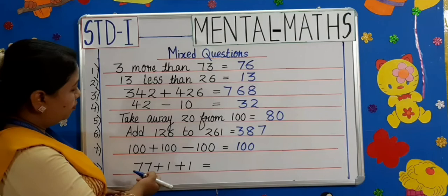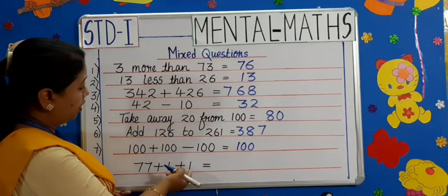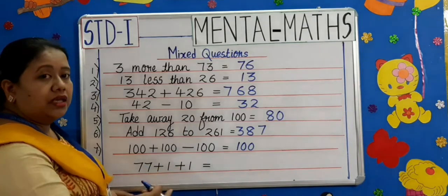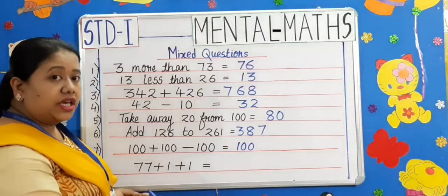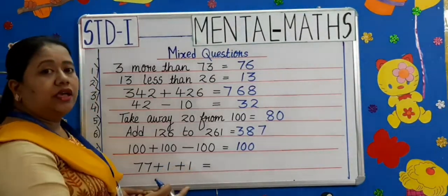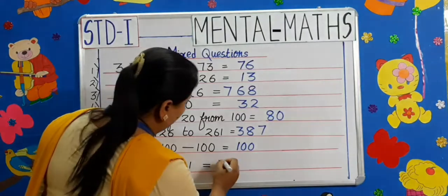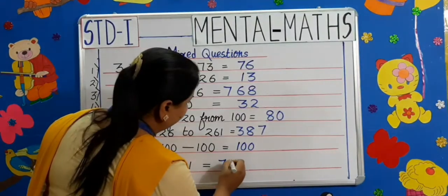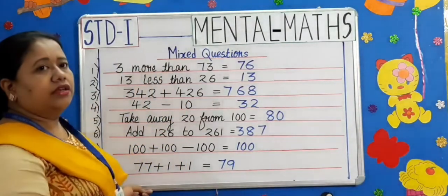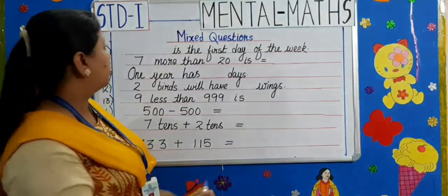Moving on to the next: 77 plus 1 plus 1. 77 plus 1 is 78, 78 plus 1 is 79. The answer is 79.